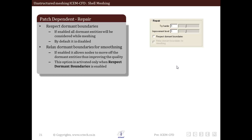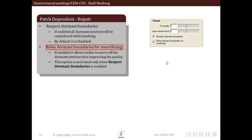Now we will discuss other repair options: respect dormant boundaries and relax dormant boundaries for smoothening, available within the repair section of the options panel. Dormant boundaries are not generally respected during patch dependent meshing because they were made dormant so they should not be considered. The respect dormant boundaries option overrides that; by activating it, the user can use restore dormant entities so dormant entities will be considered while meshing. The relax dormant boundaries for smoothening option is activated once respect dormant boundaries is enabled, and it allows the smoother to move nodes off the dormant curves to improve mesh quality. In summary, we discussed general options, boundary options, interior options, and repair options.